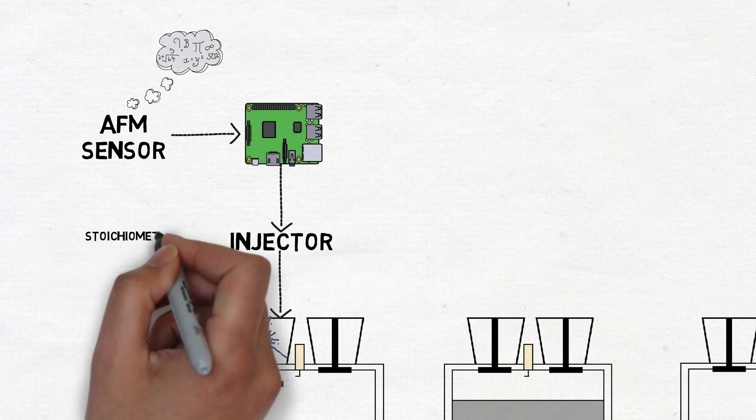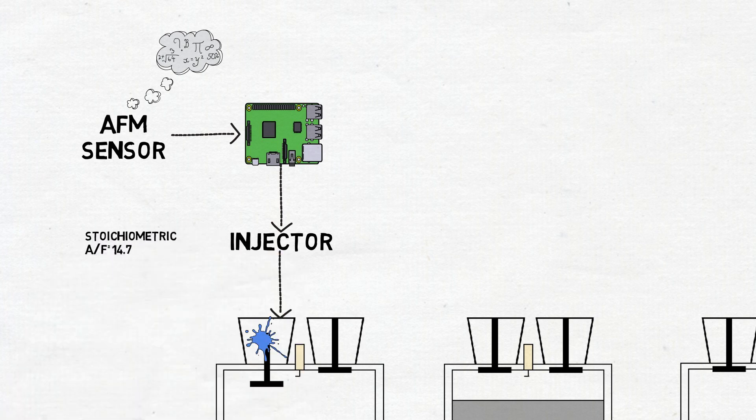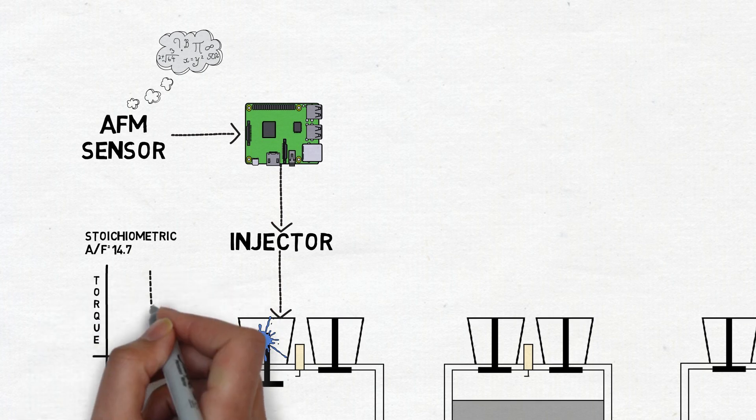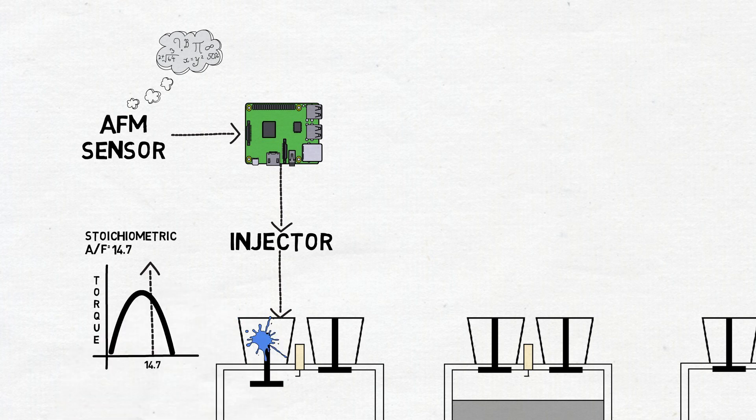The stoichiometric air fuel ratio for gasoline is about 14.7 but this depends on ethanol content and other properties as well. This means that for complete combustion we need 14.7 parts of air for every part of gasoline. However, the best ratio for performance is typically between 12.5 and 13. This is known as laminar torque or LBT.